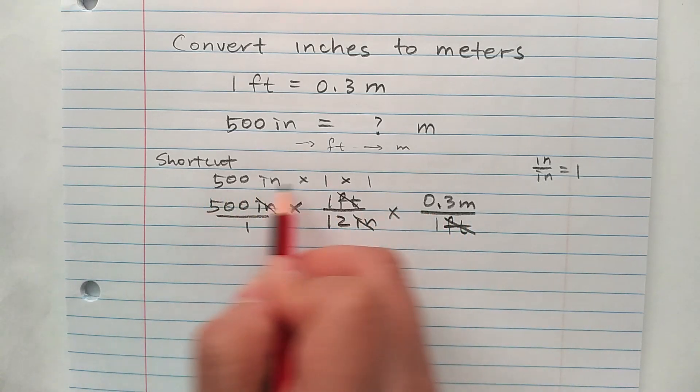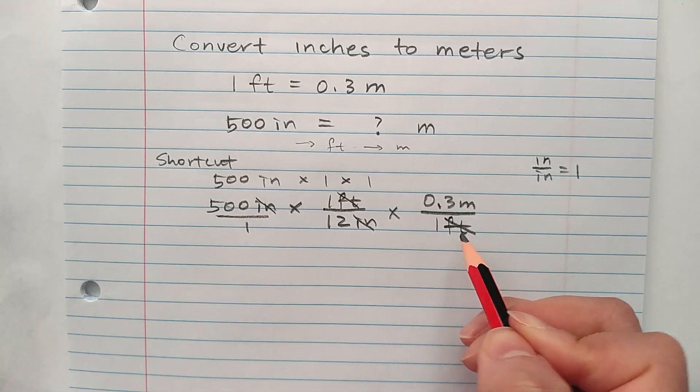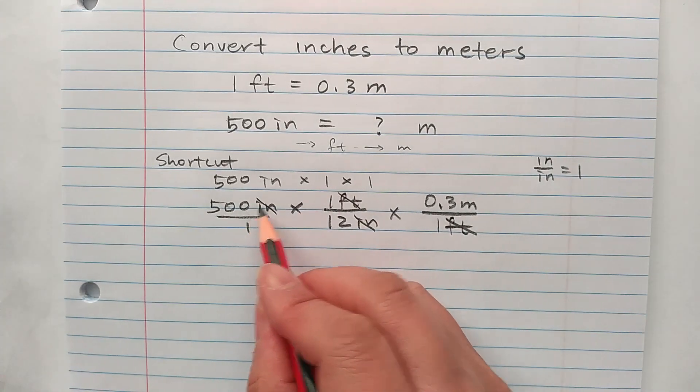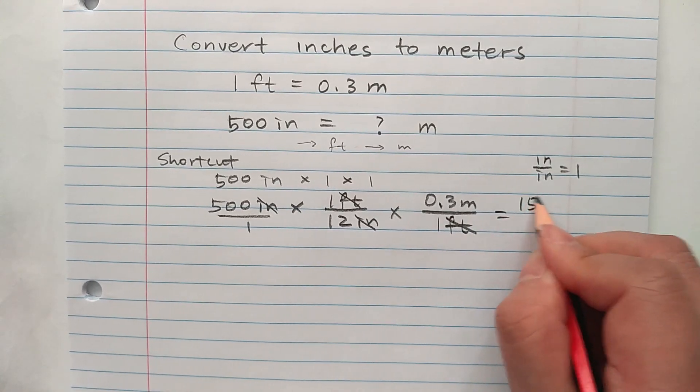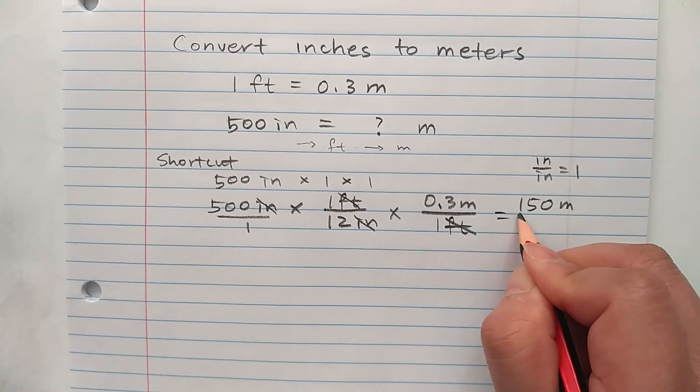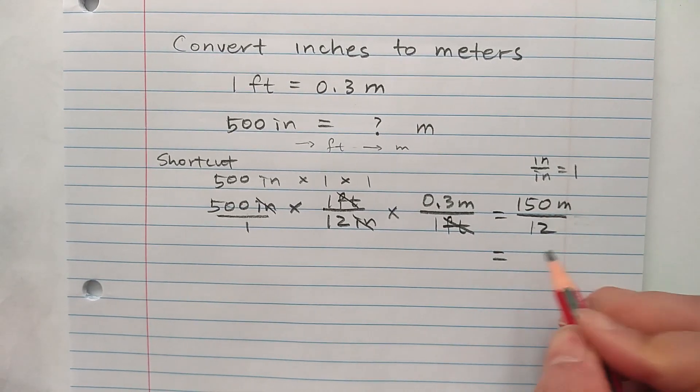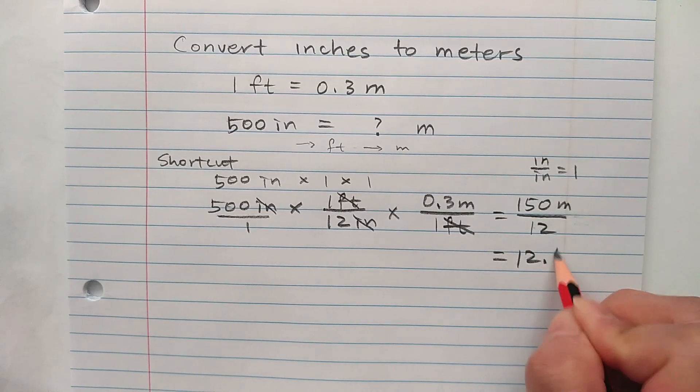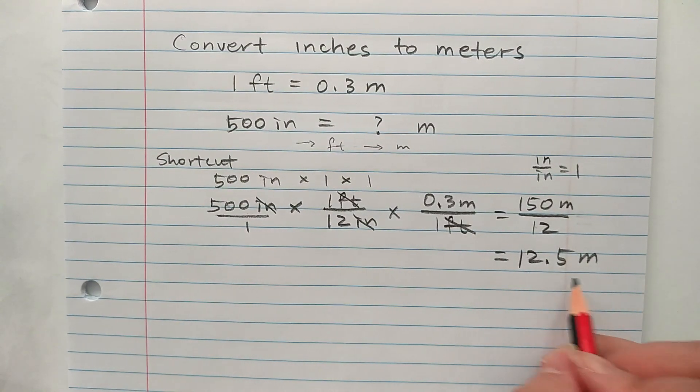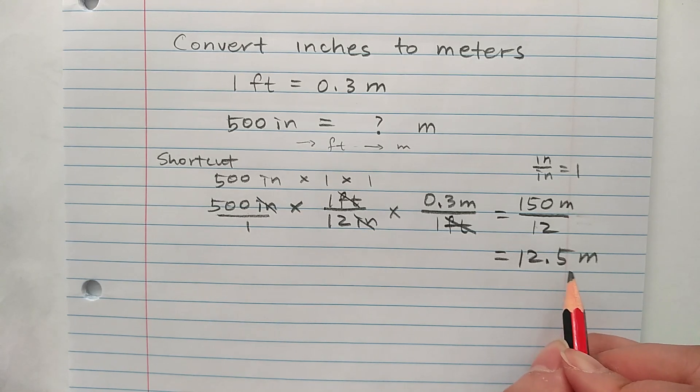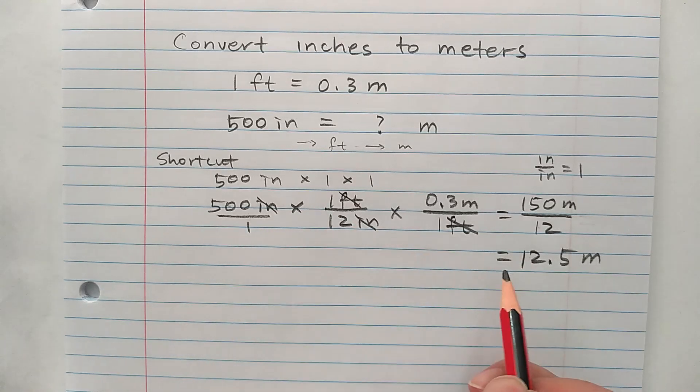Multiply everybody in the numerator and divide that by everybody in the denominator. 500 times 0.3 is 150 meters over 12 is 12.5 meters. Again the small number could be a little off if you use a conversion calculator. And we'll practice more problems.